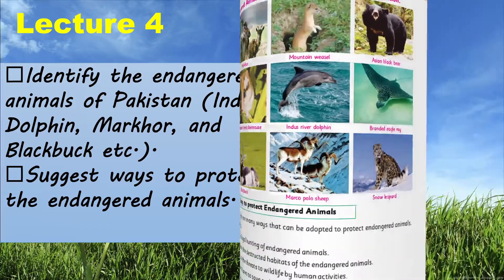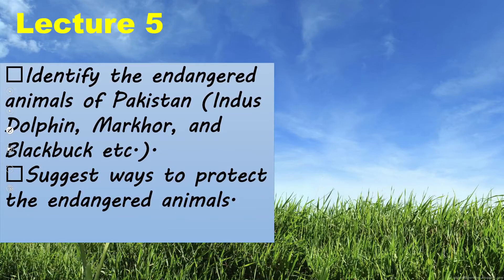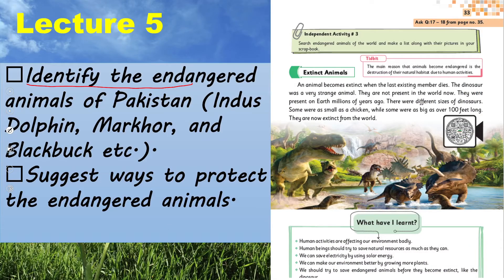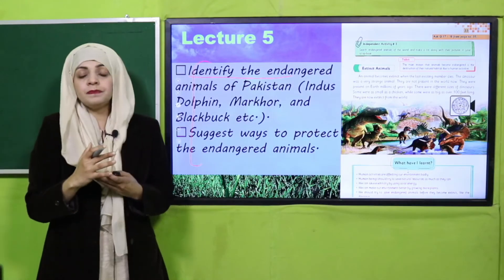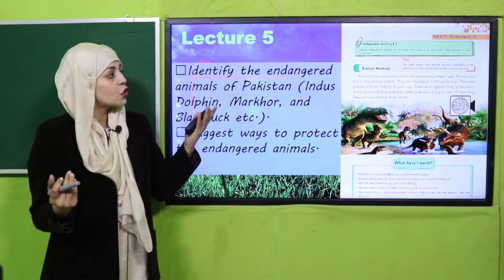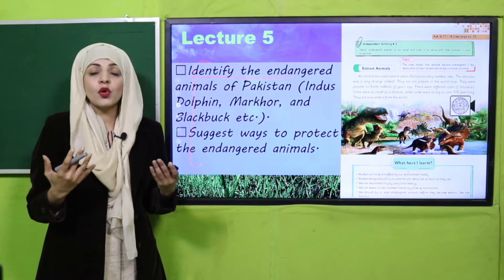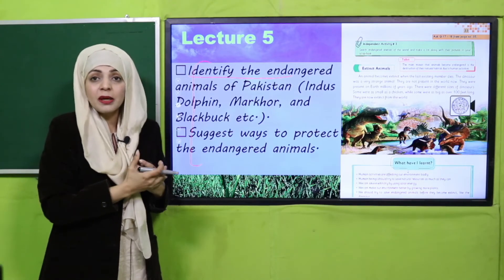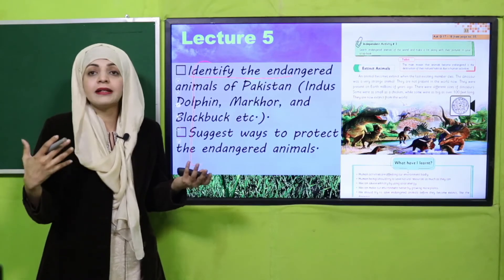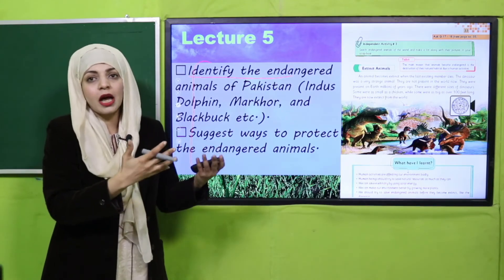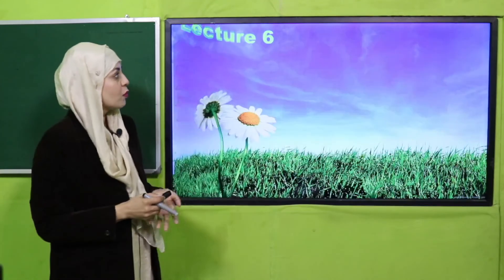In lecture number five, all the students will be able to understand about extinct animals — animals that no longer exist in the world. We will discuss how, if we do not protect endangered animals, they will ultimately finish, just like dinosaurs, Tasmanian wolves, and dodo birds. These are called extinct animals, and we can only recognize them by pictures; we cannot see them alive.